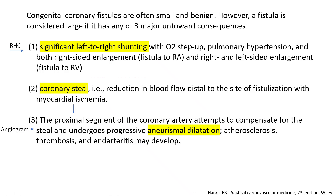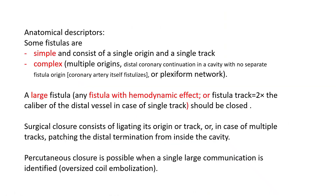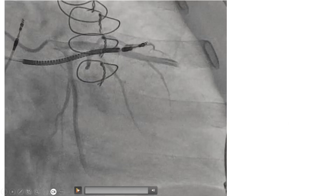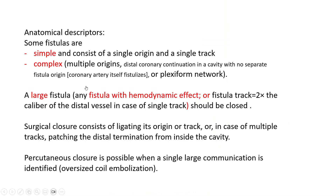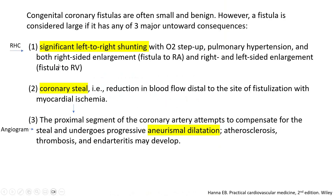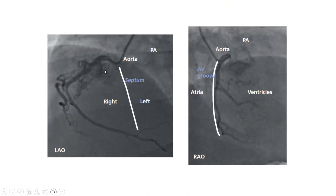Beside the description of large fistula in terms of hemodynamic effect, you will hear other descriptors — anatomical descriptors. A fistula may be simple, consisting of a single origin and a single track, like the case I just showed: single origin, single track, single termination. A fistula may also be complex, such as a case where you have multiple origins and multiple terminations in the cavity — the so-called plexiform spider web. A complex fistula does not mean it is large; it's just an anatomical descriptor.